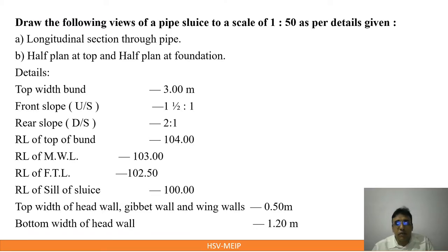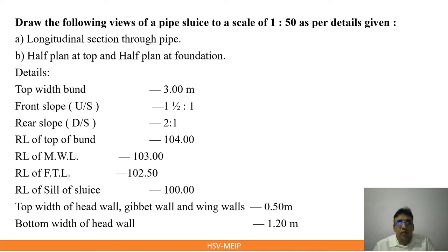Let us take up one examination problem: draw the following views of a pipe sluice. In tank sluices, a pipe is provided instead of a barrel - that is pipe sluices. To the scale 1 is to 50, as per the details given. We have to draw the longitudinal section through the pipe, and then half plan at top and half plan at foundation.